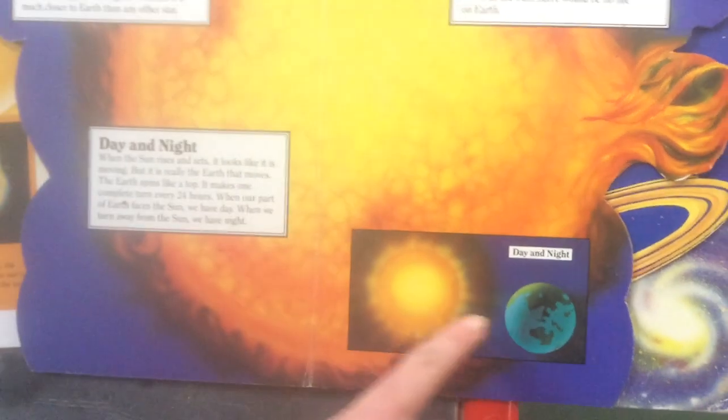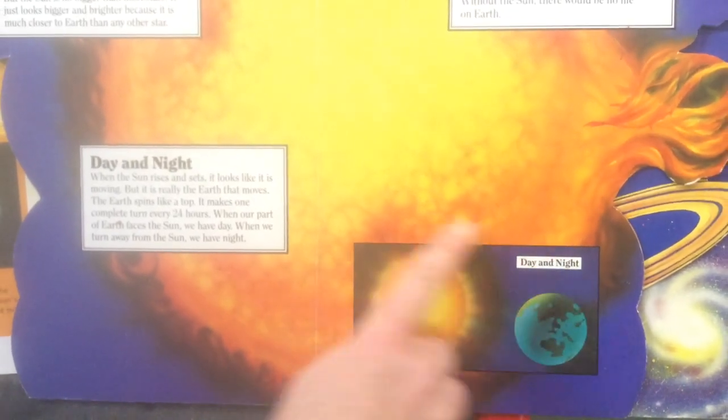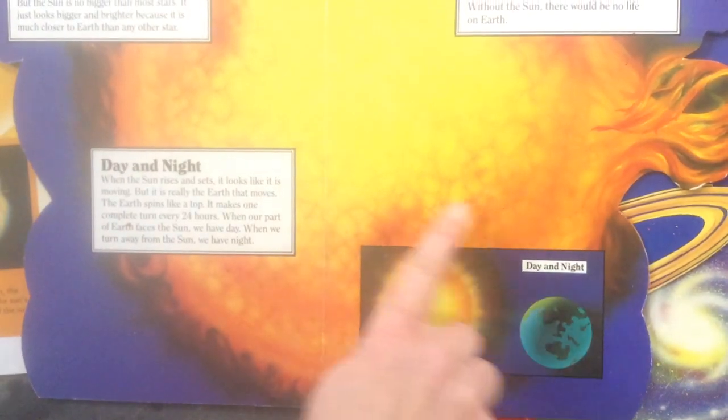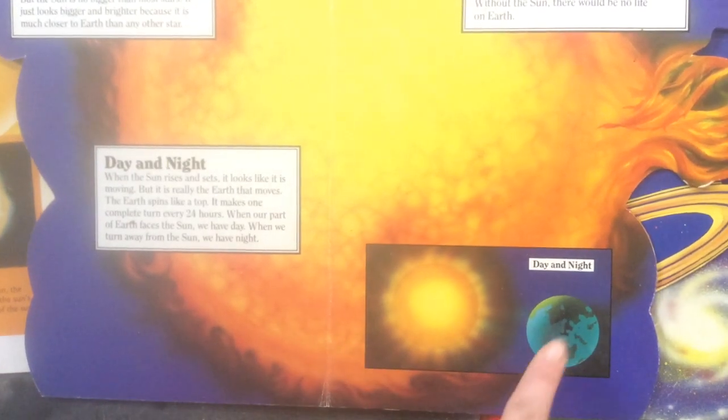And then, do you know that it takes a year for the earth to orbit around the sun? One year. January, February, March, April, May, June, July, August, September, October, November, December. It takes one year to orbit the sun.